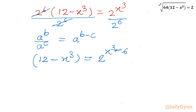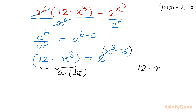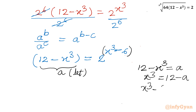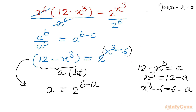Now I will use substitution. Let 12 minus x³ equal to a. So x³ can be written as 12 minus a. Now x³ minus 6 is required in the power, so x³ minus 6 will be 12 minus a minus 6, which equals 6 minus a. So I will convert our equation in this form: a equals 2 to the power (6 minus a). Remember, our substitution is 12 minus x³ equal to a.